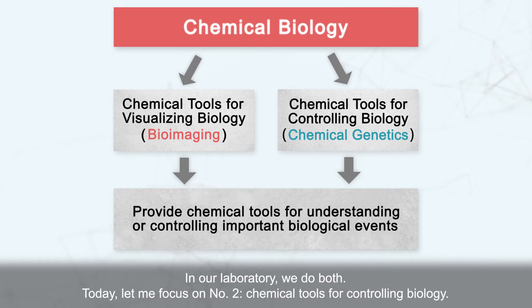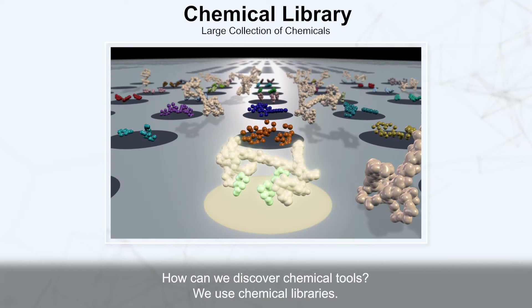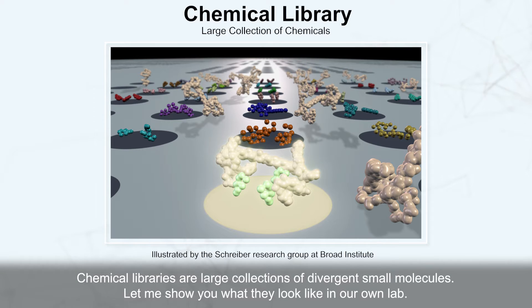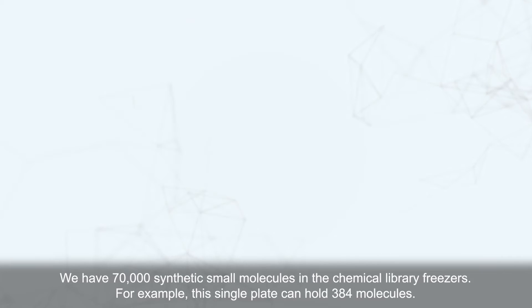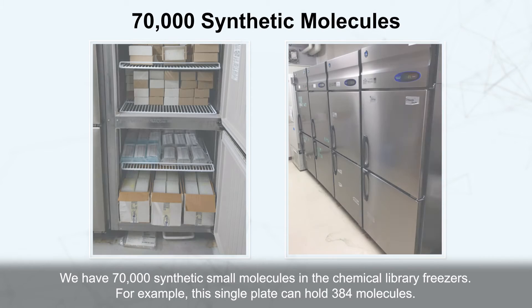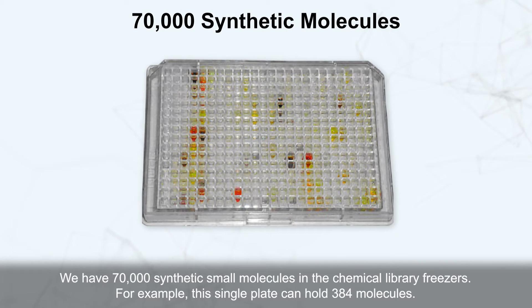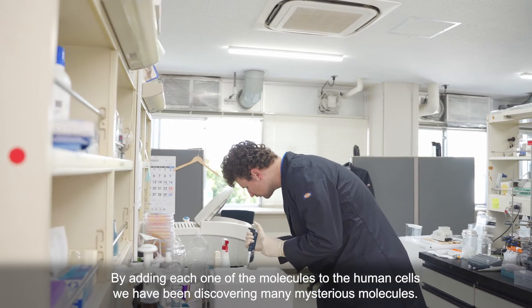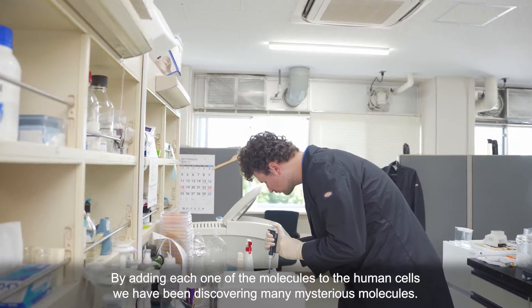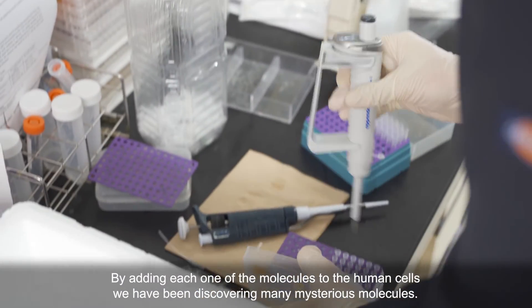Today, let me focus on number two: chemical tools for controlling biology. How can we discover chemical tools? We use chemical libraries. Chemical libraries are large collections of divergent small molecules. Let me show you how they look like in our own lab. We have 70,000 synthetic small molecules in the chemical library freezers. For example, this single plate can hold 384 molecules. By adding each one of the molecules to human cells, we have been discovering many mysterious molecules.